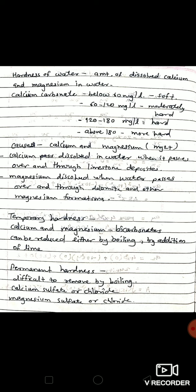Permanent hardness is generally difficult to remove by the boiling method. Sulfates or chlorides of calcium and magnesium will give permanent hardness. So to remove that permanent hardness, various methods are used.